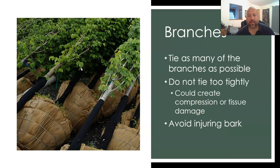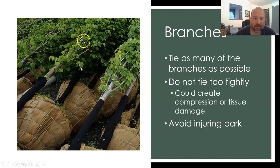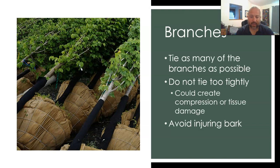When transplanting, tie up as many branches as possible to prevent limbs from snapping and causing open wounds that could lead to infection. Don't tie them too tightly — avoid compression or tissue damage to the limbs or where they attach to the stem. Leave branches tied for the minimum amount of time necessary, and avoid injuring the bark throughout the process.